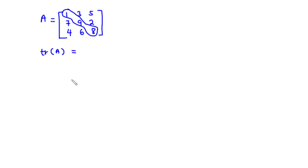Now let's try to sum them up. So that's going to be 1 plus 9 plus 8 and that's equal to 18. Therefore the trace of matrix A is equal to 18.